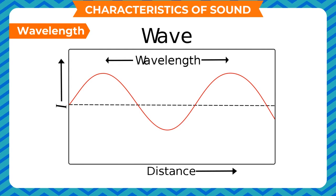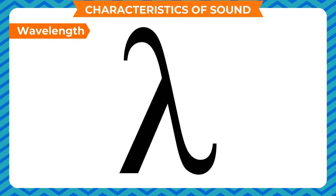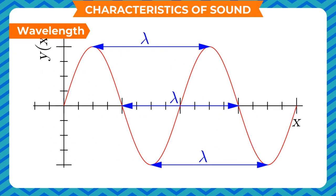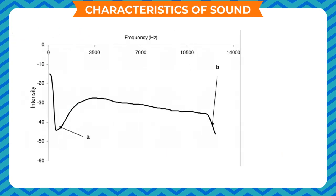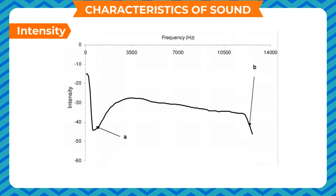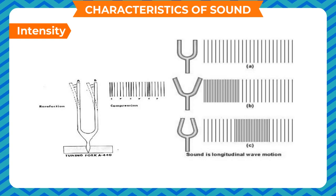Wavelength refers to the distance between two consecutive crests or troughs, denoted by lambda. The energy of a wave is greater if its wavelength is small. The wavelength of red light is maximum while that of violet light is minimum. Intensity: the quality of a sound refers to the frequencies present in it and their relative loudness. Loudness of sound is proportional to the square of the amplitude — if amplitude doubles, loudness increases by a factor of four. Loudness is expressed in decibels.